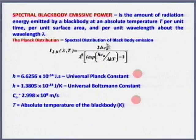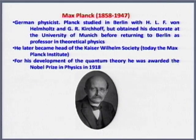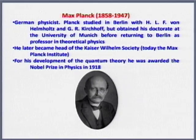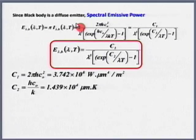This was given by Planck, who also received the Nobel Prize for it. Now, the spectral emissive power E_λ,b(λ,T) = π · I_λ,b(λ,T). The factor of π comes from the fact that a black body is a diffuse emitter — as Professor Haroon derived in the morning: emissive power E = πI for a diffuse emitter. Defining C₁ = 2hc₀² and C₂ = hc₀/k, the expression becomes E_λ,b = C₁ / [λ⁵ (exp(C₂/λT) − 1)].